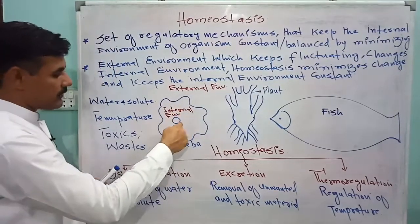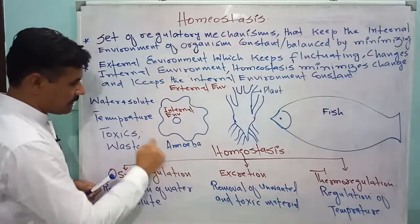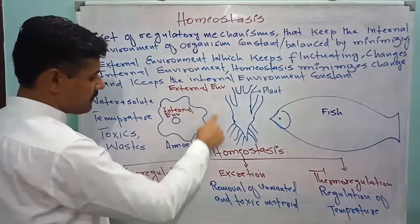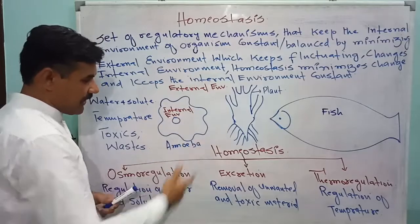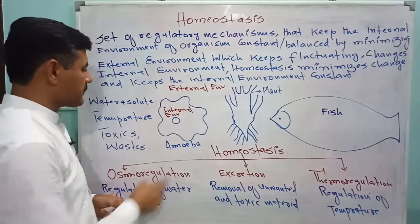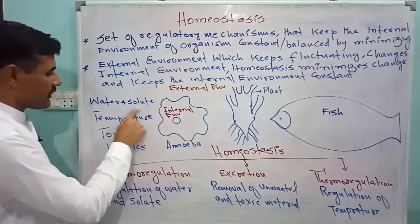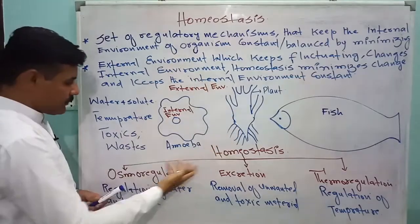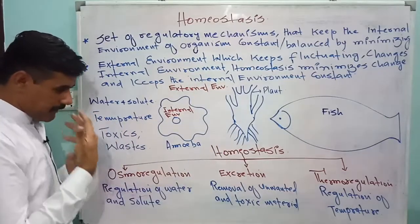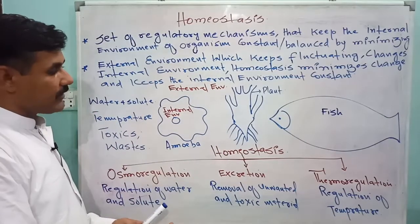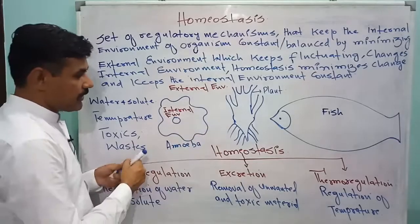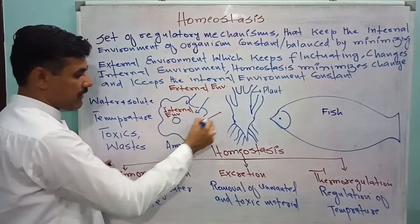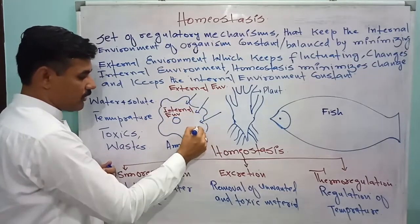An organism is continuously interacting with its external environment. If there is a variation in the external environment, that variation is registered. For example, variation can be in water, in solutes, or in temperature — any change that comes in the external environment affects the internal environment of an organism.